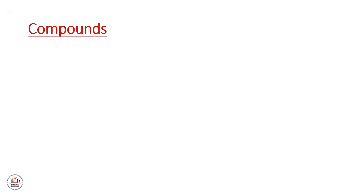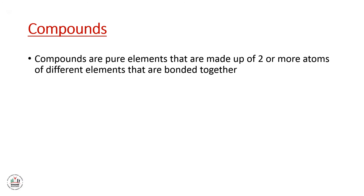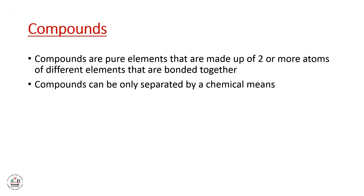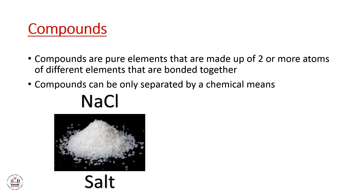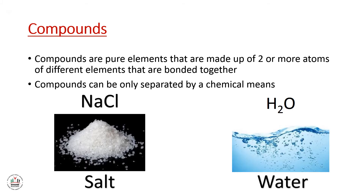The second part of pure substances is compounds. Compounds are made up of two or more atoms of different elements that are bonded together. Compounds can only be separated by chemical means. An example of a compound is salt, which is sodium chloride, NaCl. A second example is water, which consists of hydrogen and oxygen, H₂O.